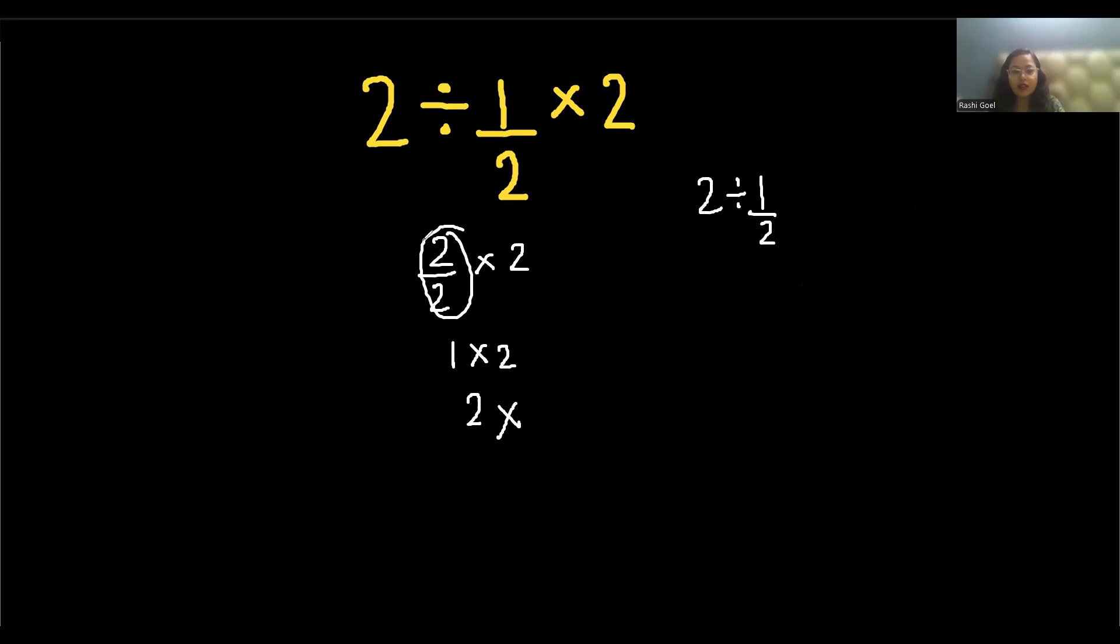So you can write it like this. If you have confusion, you can put the bracket here and then solve it like this and use the KCF rule which says that keep, C stands for change, and F stands for flip.